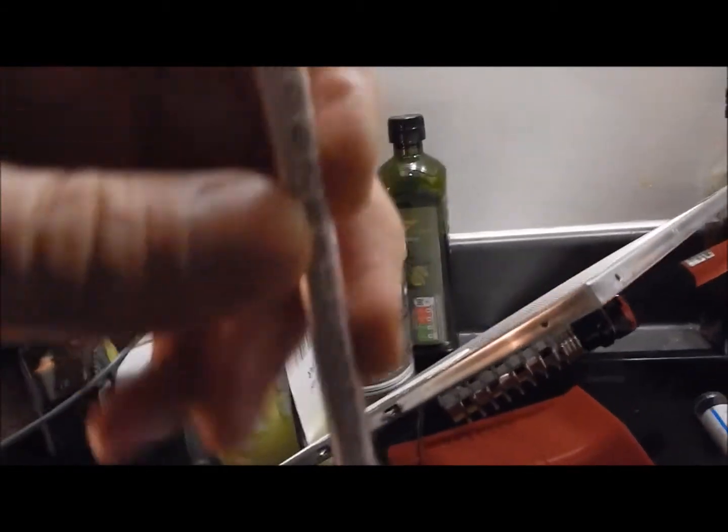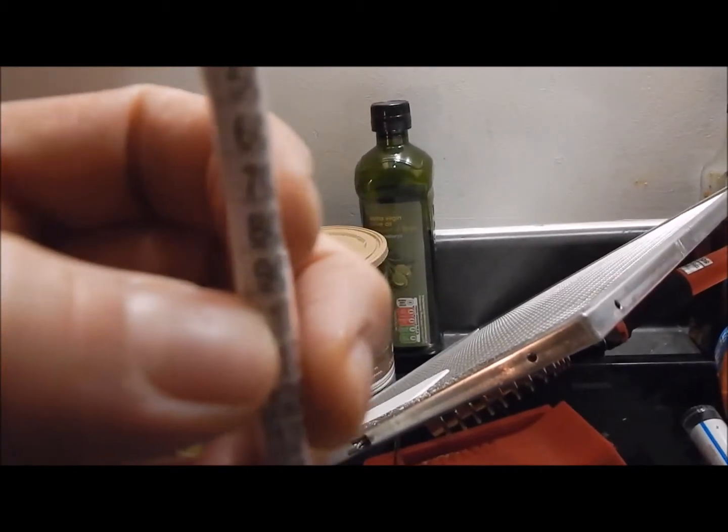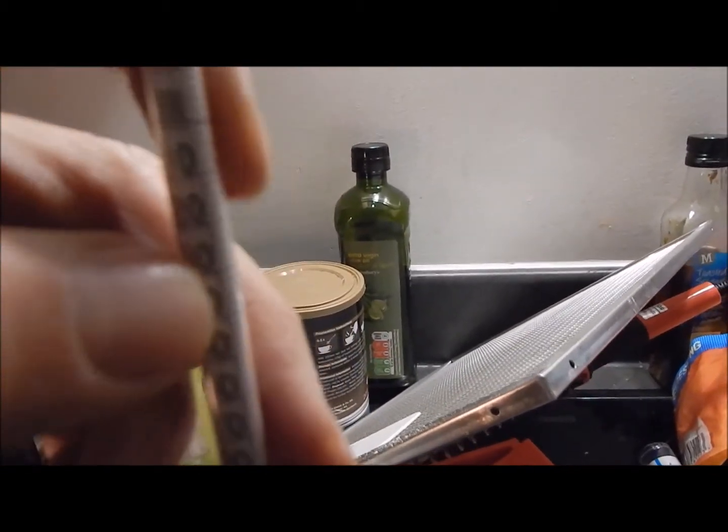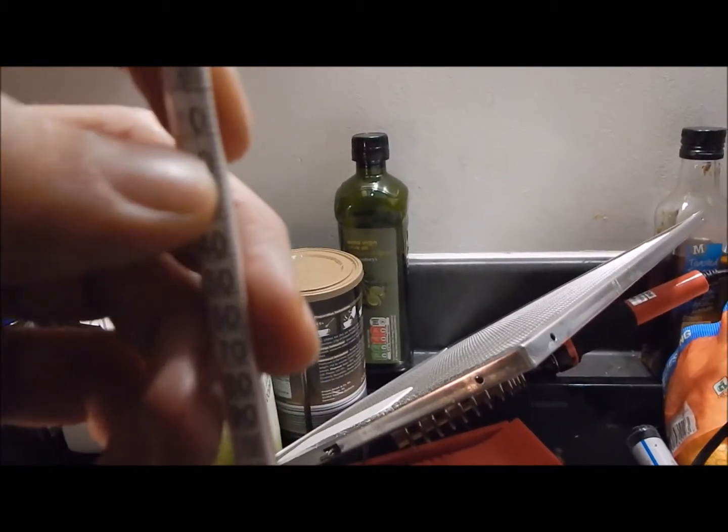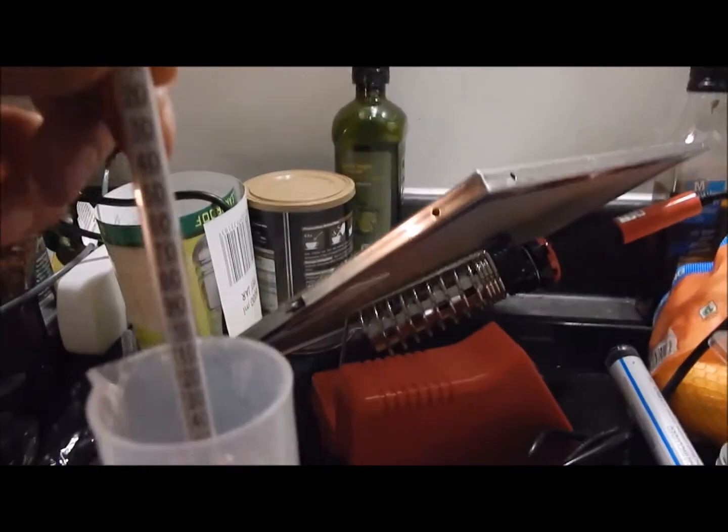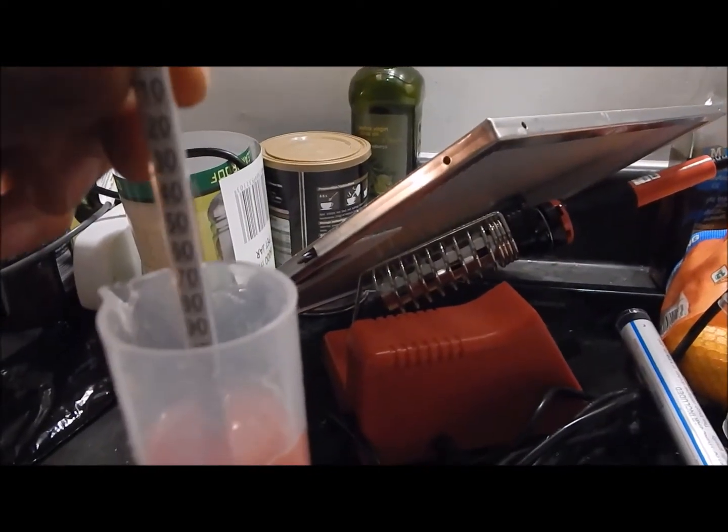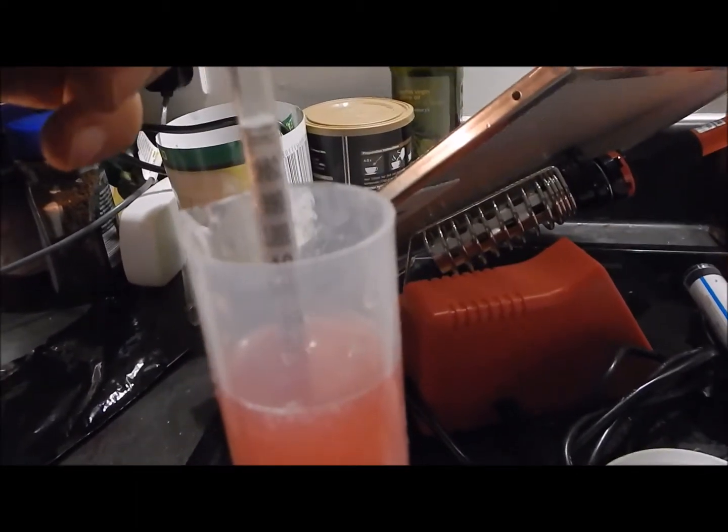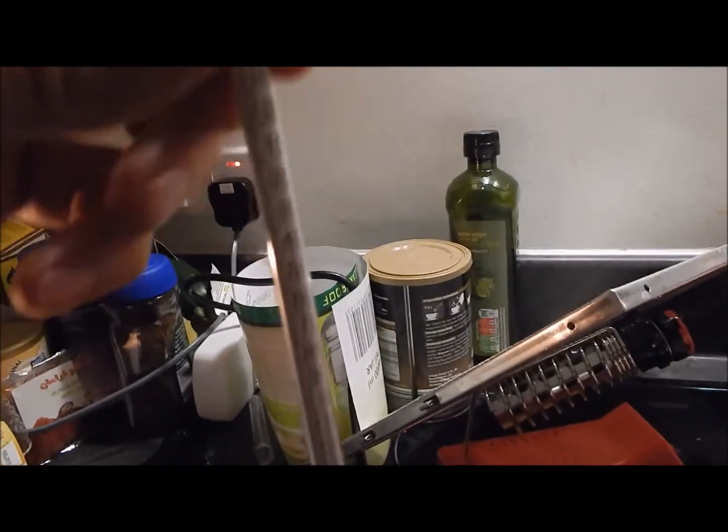As the yeast starts digesting the sugar, the hydrometer - if you test your grape juice again, I mean your wine - you will get the low readings on 3 to 1.